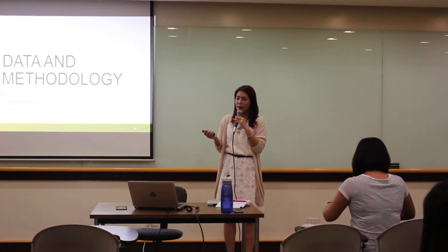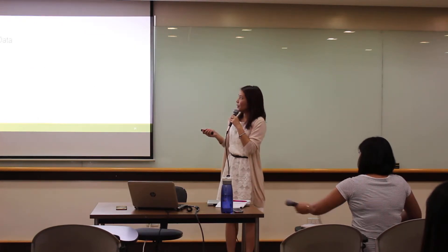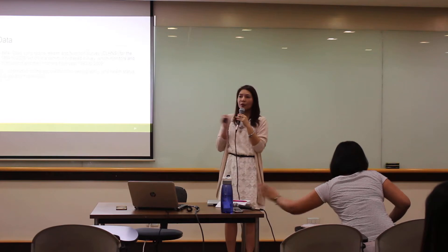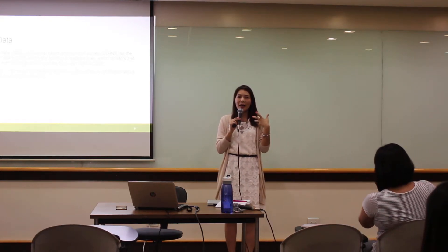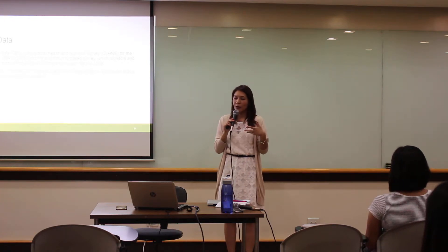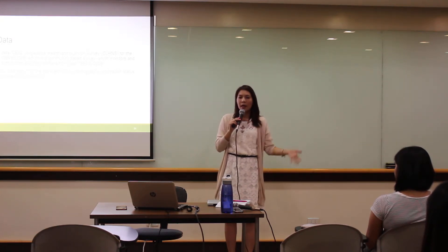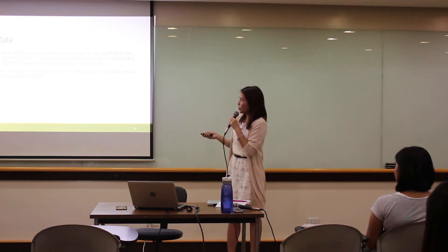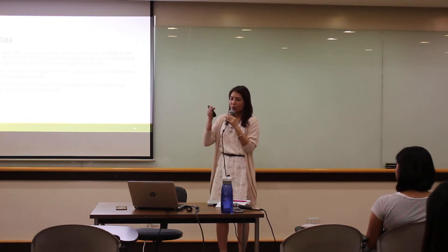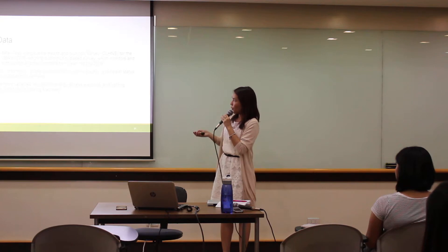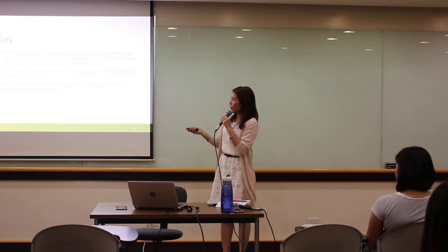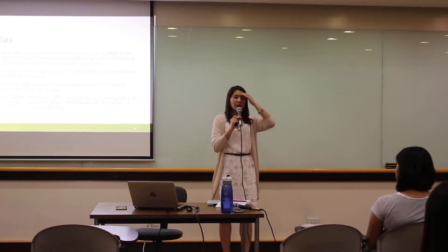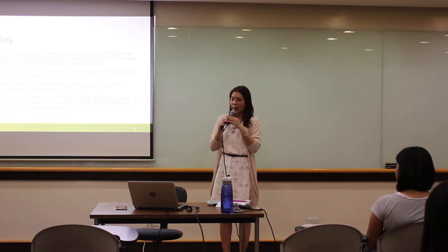For the data, we use CAHNS — the Cebu Longitudinal Health and Nutrition Survey. It gathers social, economic, and demographic information about mothers starting in 1983, then traces them through their children and grandchildren — three generations in total. The independent variables are divided into three: household energy access (whether the household uses electricity as a lighting source), and the type of cooking fuel used. Outcome variables are health, labor force outcomes, and time allocation.